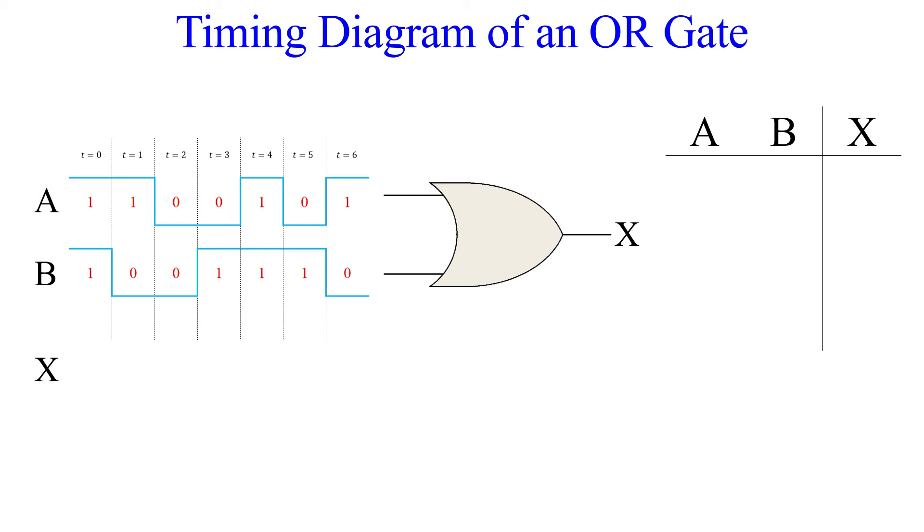Of course, you can skip the truth table and make the corresponding high or low output level for each time segment if you like, but we'll do it using the truth table for the practice. The first thing we want to do is mark our input signal with 1s and 0s at each time segment. These are our values for the truth table.